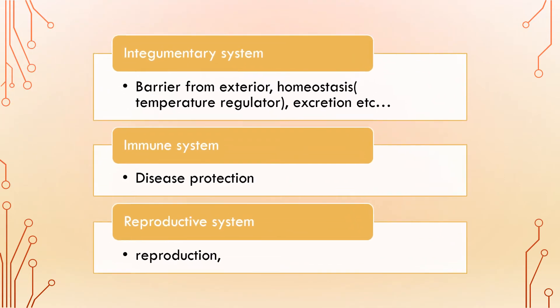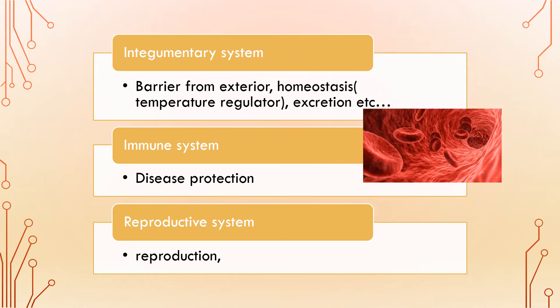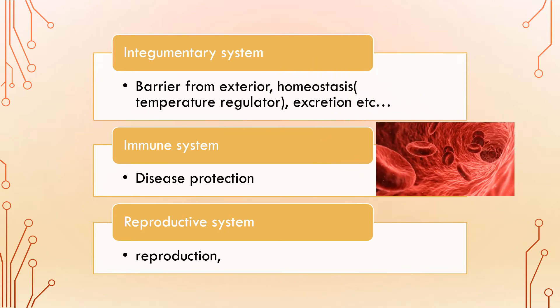There is also the integumentary system, which is the skin that provides a barrier from the exterior. It also provides homeostasis like temperature regulation and excretion - it excretes sweat out of the body. There is the immune system which protects the body against disease.